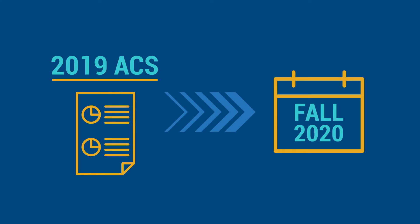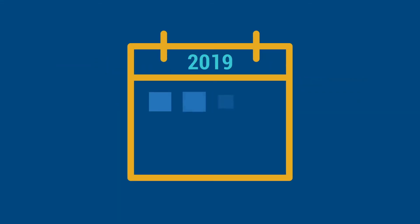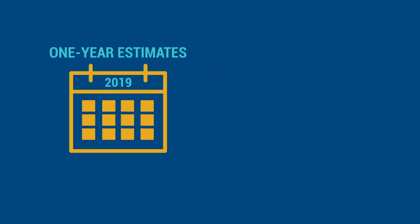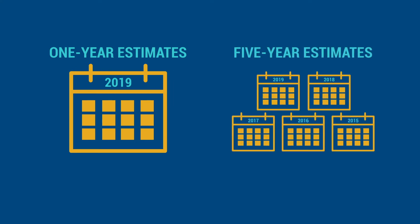Because the ACS is in the field continuously and data are pooled across a calendar year to produce estimates for that year, ACS estimates reflect a period of time rather than a single point in time. The Census Bureau produces two main types of ACS estimates: one-year estimates and five-year estimates. The one-year ACS estimates provide data for a 12-month calendar year period, and the five-year estimates combine 60 consecutive months of data to produce estimates that cover a five-year period.